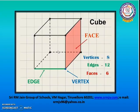This is a cube. Cube has eight corners, twelve edges, and six faces. Cube looks like a dice.